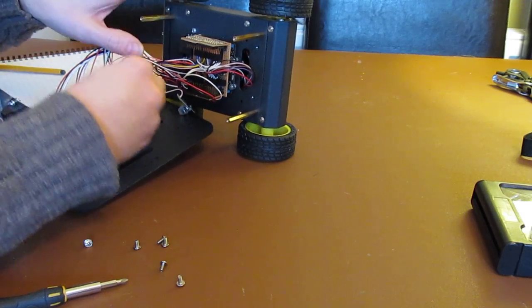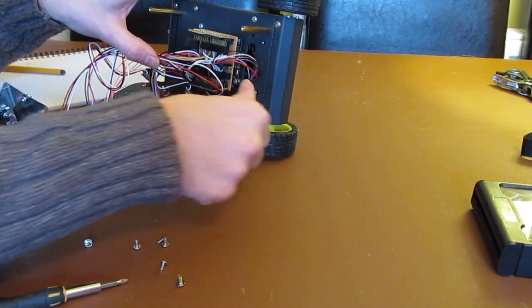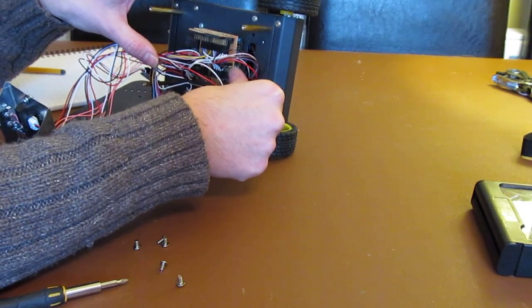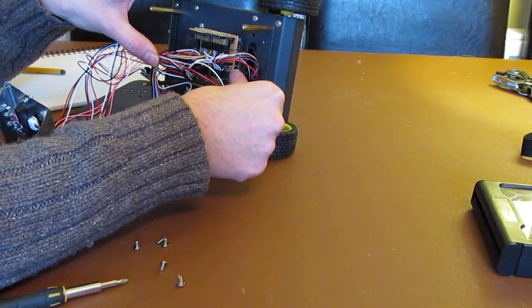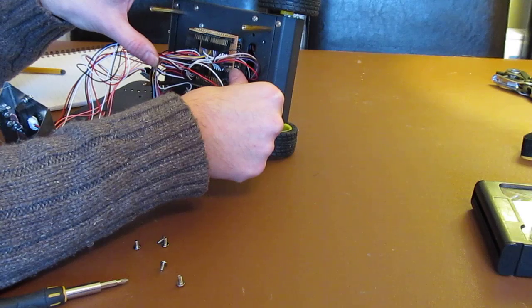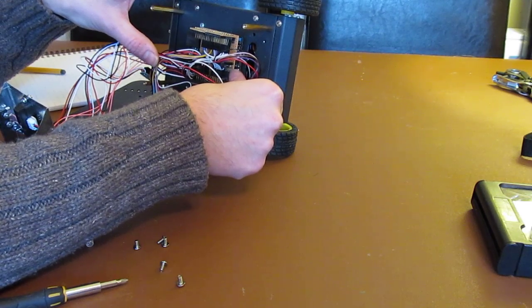I've got the opto-isolators just fitted in here. These, as well as isolating the power supply, they also mean that the wheels won't run at startup, because the weak pull-ups in the Netduino don't activate the opto-isolators at startup.